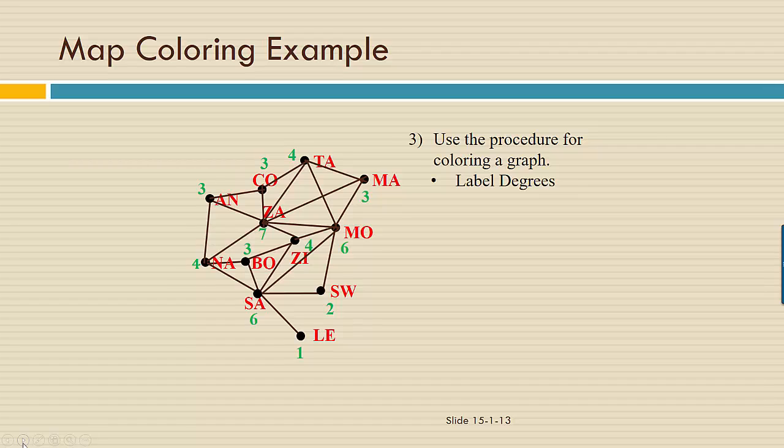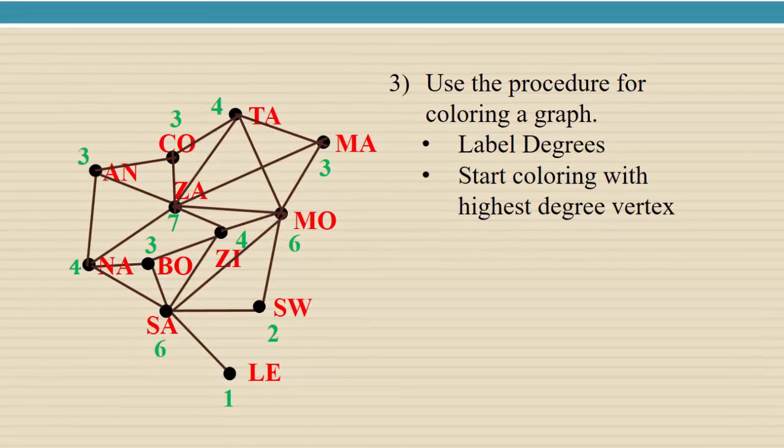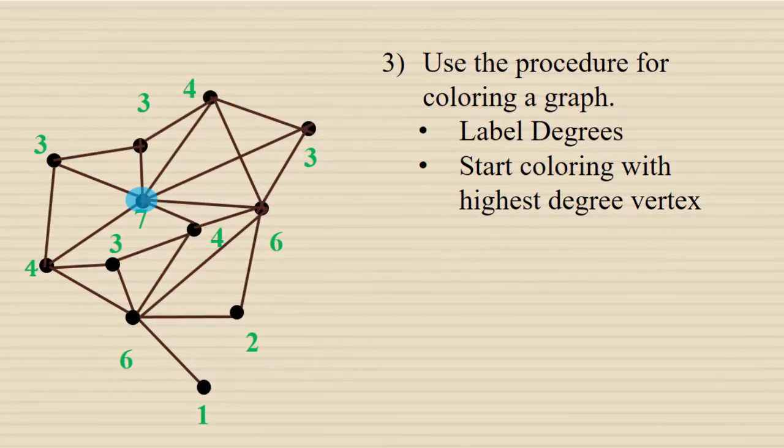We do this because we like to focus on the highest degrees first. This is advantageous in trying to get the least number of colors necessary to color the map. We're going to start coloring with the degree seven vertex here. I chose blue, you can choose any color. It's the number of colors that matters, not the actual color. And we're going to try to color as many vertices blue as possible.